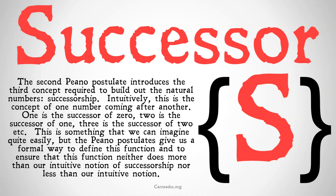The second Peano postulate introduces the third concept required to build out the natural numbers: the idea of successorship. Intuitively, this is the concept of one number coming after another. One is the successor of zero, two is the successor of one, three is the successor of two, and so on. The Peano postulates give us a formal way to define this function and to ensure that it neither does more nor less than our intuitive notion of successorship.